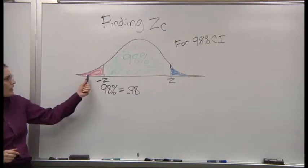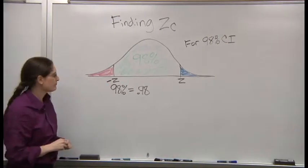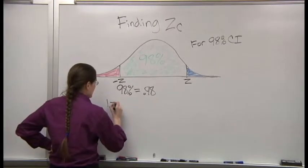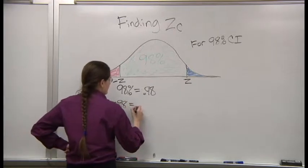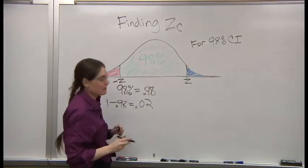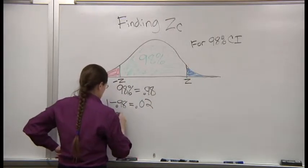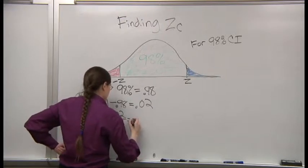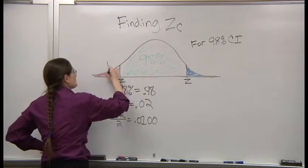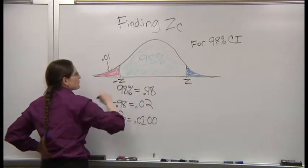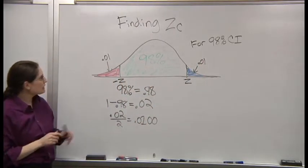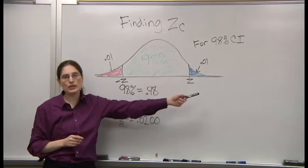What is the area of the red part? Well, the total is one, so one minus 0.98 is 0.02. But that's in the red part and the blue part put together. So the tails, each of them has an area of 0.01.